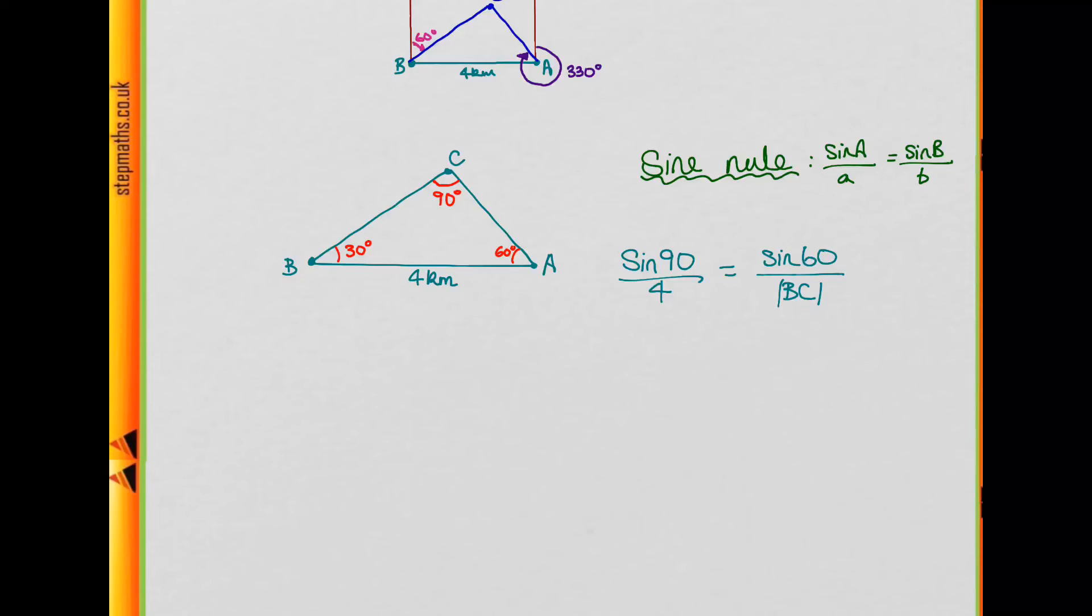Okay, so you should get sine at C, which is 90 degrees, divided by small c, which is the side opposite the angle at C, so this side here, which is 4, is equal to sine 60 here, divided by the length of the side opposite A, so BC. So this is the length of the side BC.